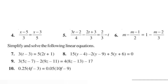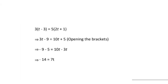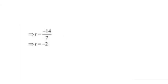Question number 7 - simplify and solve the linear equation: 3 times (t minus 3) is equal to 5 times (2t plus 1). First we open the brackets: 3t minus 9 equals 10t plus 5. Writing variables on one side: 10t minus 3t equals minus 9 minus 5. Both constants are negative, so minus 9 minus 5 is minus 14, and 10t minus 3t is 7t. So t is equal to minus 14 upon 7.